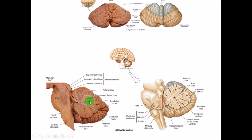In section, you can see: the superior surface, the inferior surface, the fourth ventricle, the pons, medulla oblongata, and the midbrain. The arbor vitae looks like a tree when a section is taken. This is the cerebellar cortex. Here is the anterior lobe separated from the posterior lobe by the fissura prima, and the flocculonodular lobe separated from the posterior lobe by the posterolateral fissure.